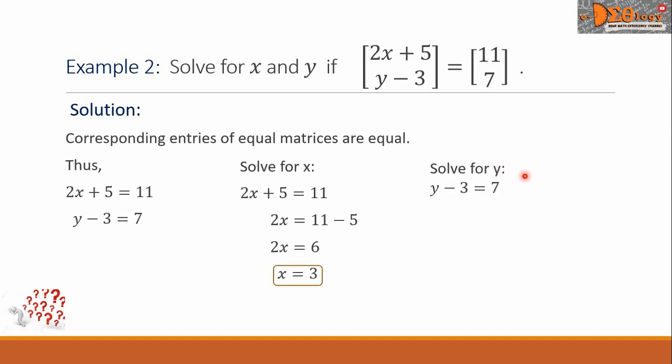Let us now solve for Y. We copy the second equation, Y minus 3 equals 7. Let us isolate Y. This negative 3, we transpose to the right. So we have Y equals 7 plus 3, and the right side becomes 10. This is the value of Y.